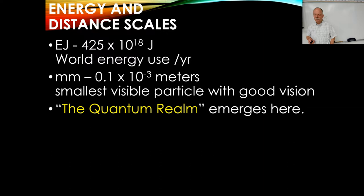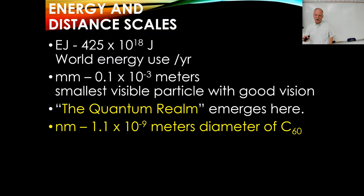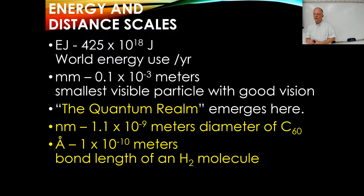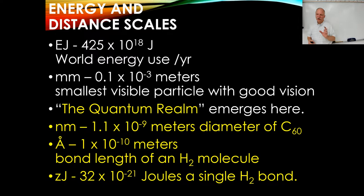Then we get down to something, the smallest speck with good vision. You can see maybe a hundred micron particle with good eyes and that's about as small as you can see visually without magnification. Once we get below that we get into the nano scale. We get down to about one nanometer, that's about the diameter of a carbon-60 molecule, a buckyball, a little soccer ball shape made out of carbon. We're getting down to where you definitely see quantum effects. Some of the smallest molecules like hydrogen are a tenth of a nanometer or one angstrom. That's 10 to the minus 10 meters.